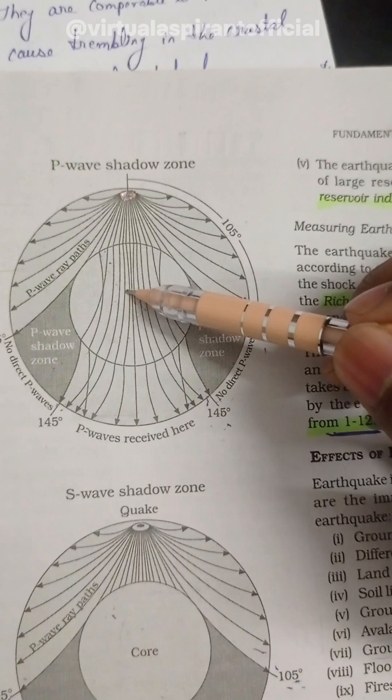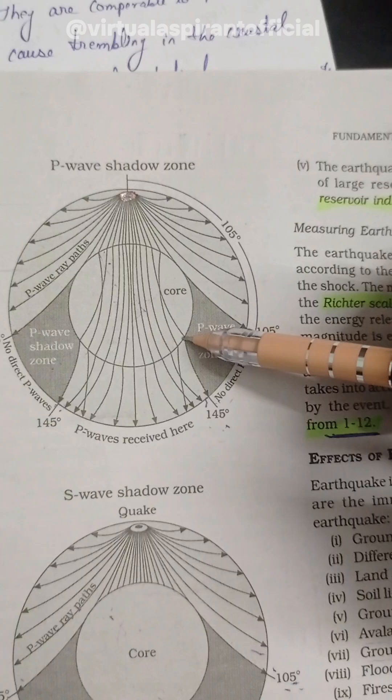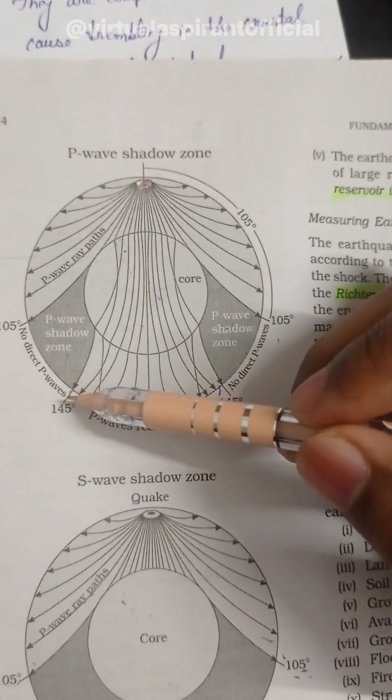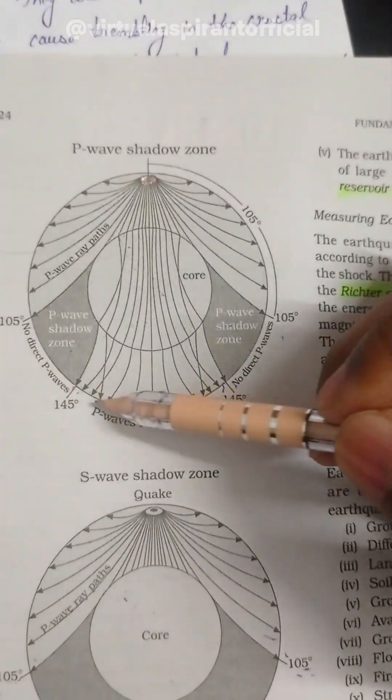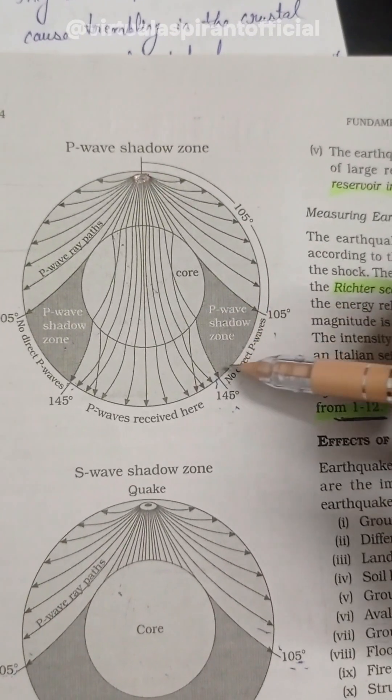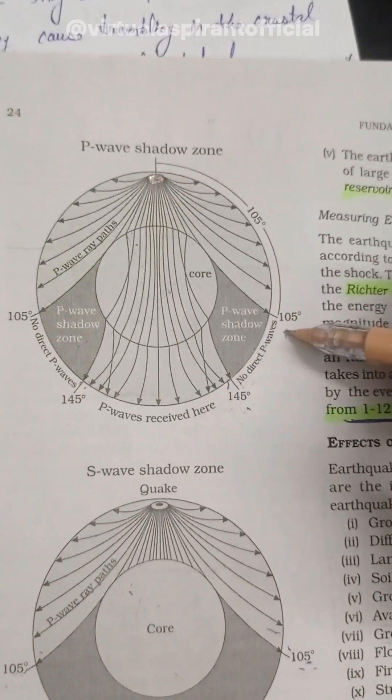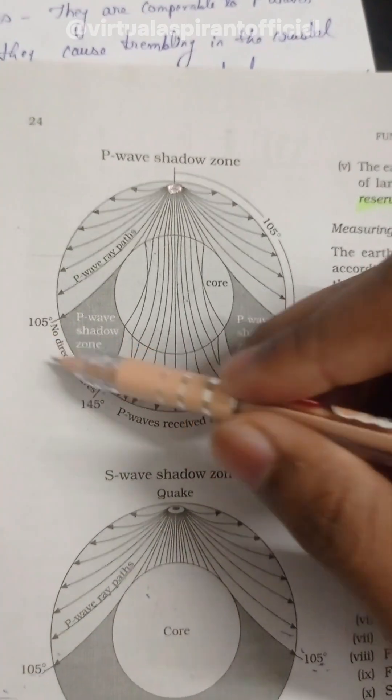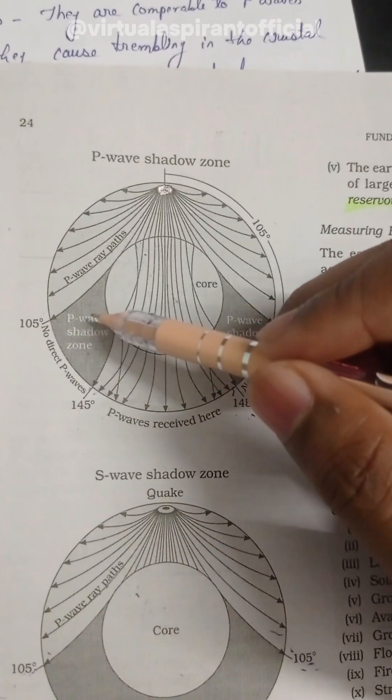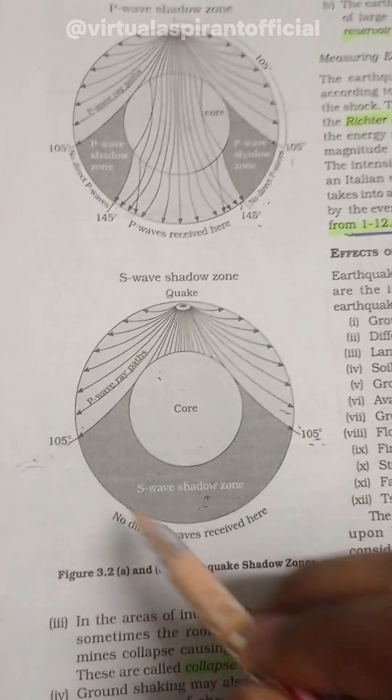It crisscrosses at the center of the earth, refracts, and re-emerges at the other side. The widest distance it can penetrate is a 145 degree angle. So this area again remains shadow for the P waves. It cannot penetrate in this area. There is a zone between 145 and 105 degrees. So both sides, 105 and 145, these areas are the shadow zone of P waves, and this whole area from 145 to 105 is a shadow zone of the S waves.